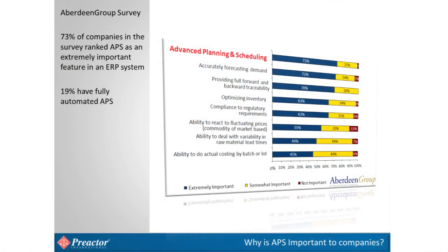In a survey carried out by the Aberdeen Group, when companies were asked what were the most important features in an ERP system, APS came out on top — 75% of companies said APS was extremely important to them. However, only 19% had a fully automated system within their ERP or used a third-party tool like Preactor. Most use spreadsheets to carry out the planning process.